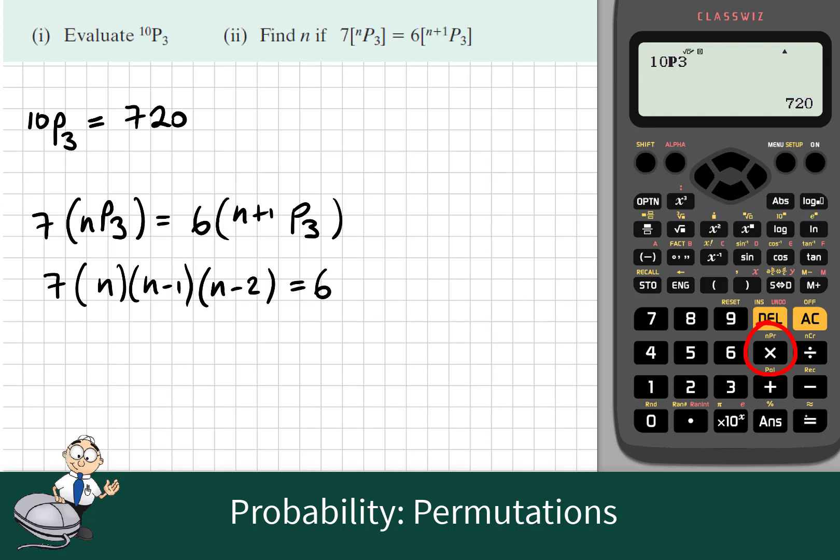(n+1)P3 means (n+1) by n by (n-1). The number of ways of choosing 3 things out of (n+1) objects and arranging them.